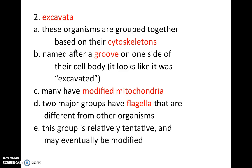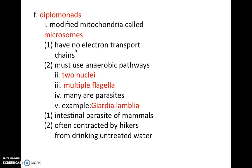The first subgroup are called diplomonads. In diplomonads, they have modified mitochondria called mitosomes. Mitosomes have no electron transport chain, which is interesting because the electron transport chain fuels energy in plants and animals through the Krebs cycle or cellular respiration. So diplomonads use other anaerobic pathways to receive their energy. They also have two nuclei and multiple flagella on their cellular structure.